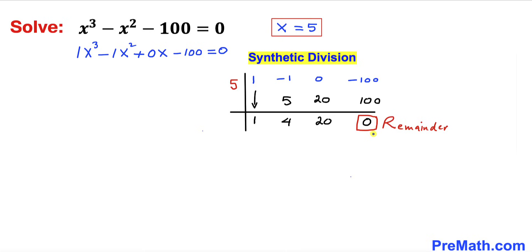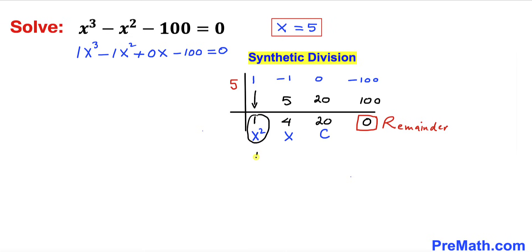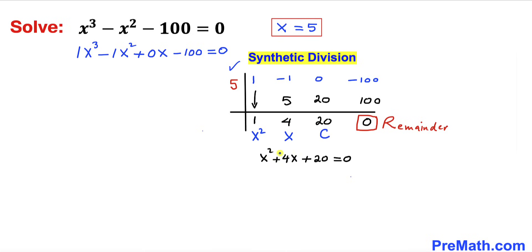With remainder 0, we focus on the remaining coefficients: 1 is the coefficient of x², 4 is the coefficient of x, and 20 is the constant. This gives us the quadratic equation x² + 4x + 20 = 0. For more videos on synthetic division, please check the link in the description.